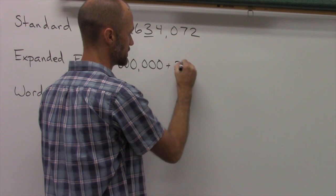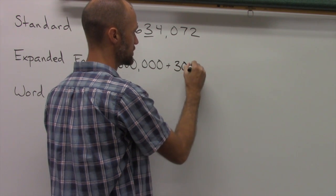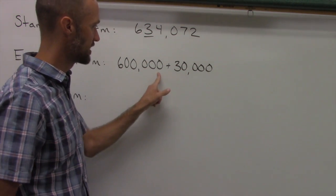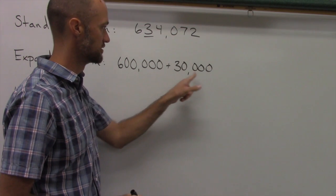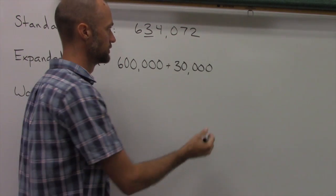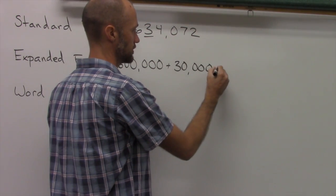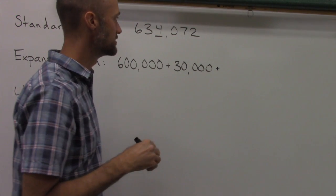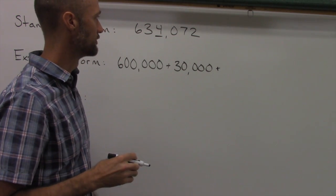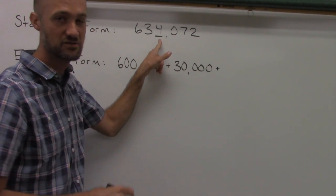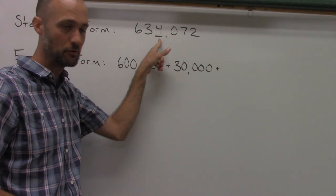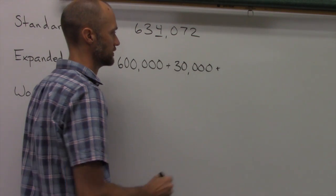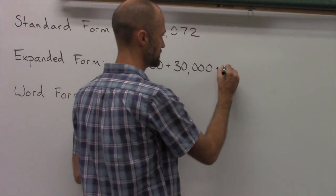So we write that — 30,000. We end up with 600,000 plus 30,000. Then we write the next digit, the 4. It's not just a 4; it's a 4 in the thousands place, so we write 4,000.